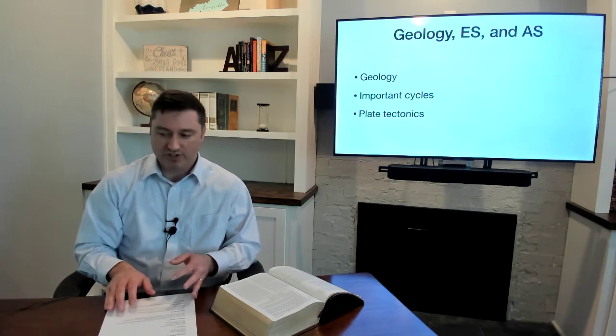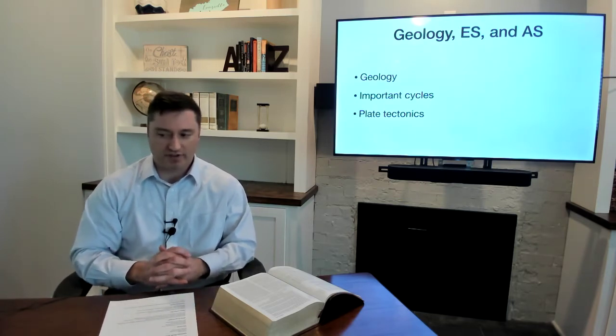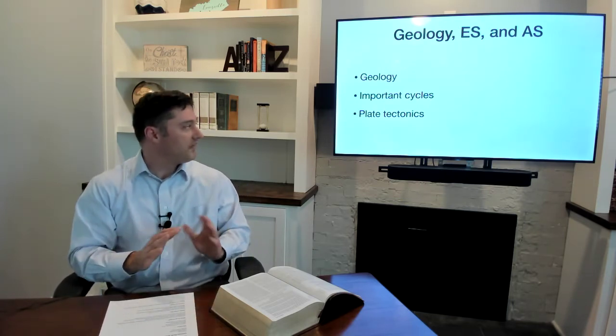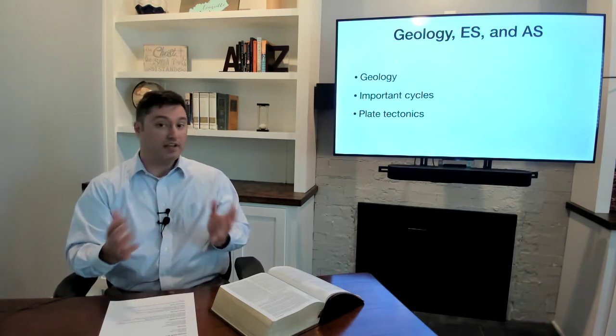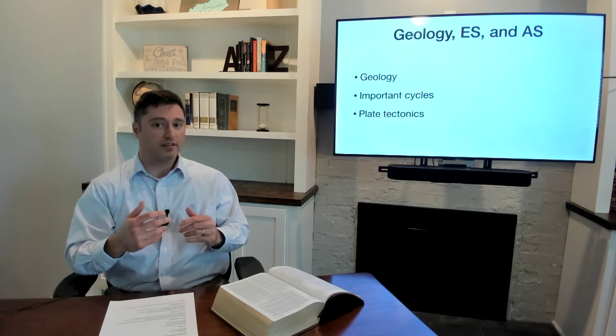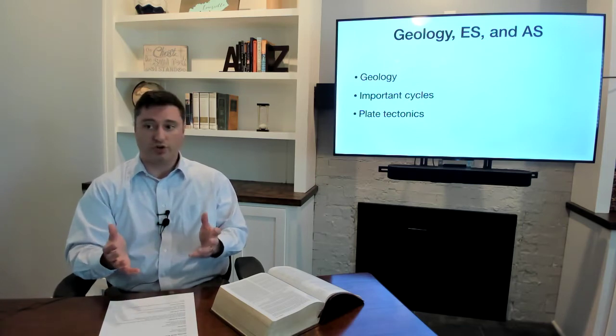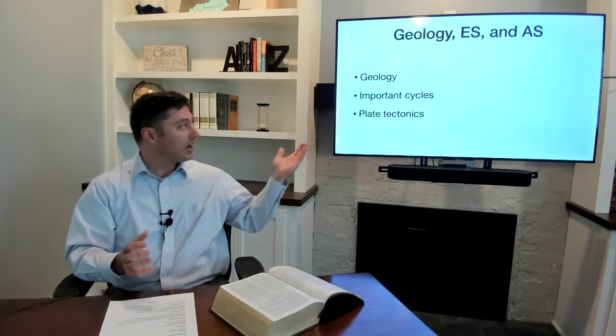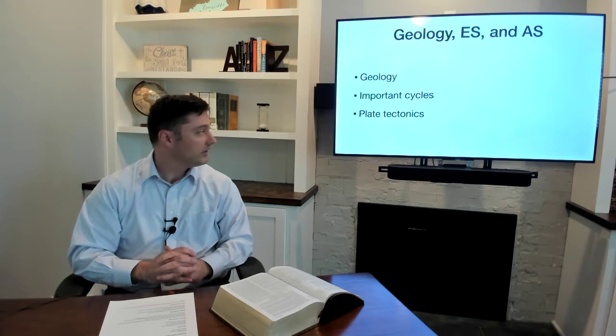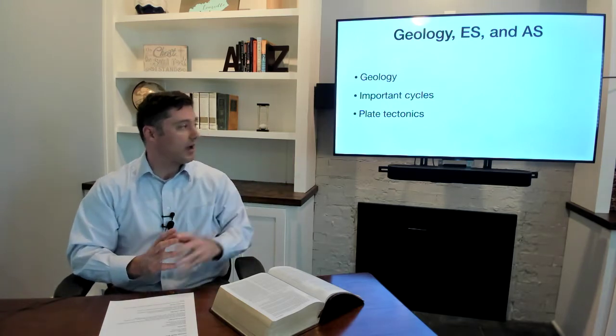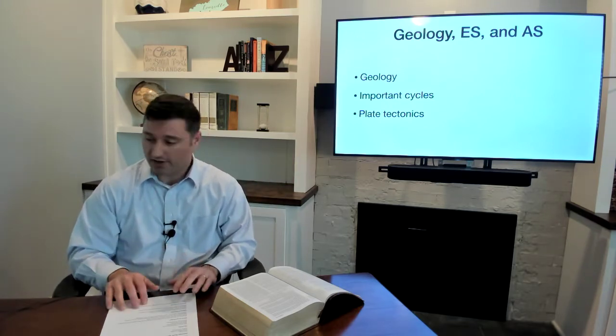So as we talk about geology, earth science, and atmospheric science, the three big things we're going to talk about are geology as a whole. What is geology? What are some of the things that geologists say about the world around us? We're going to talk about important cycles. The water cycle is the big one. We're going to briefly mention the carbon and nitrogen cycles, and then we're going to spend some time talking about plate tectonics because it's fun.